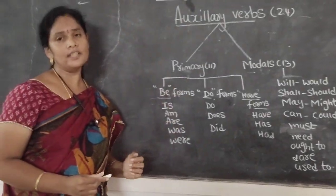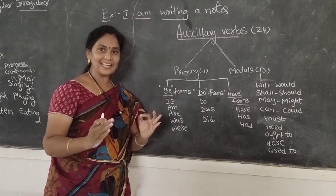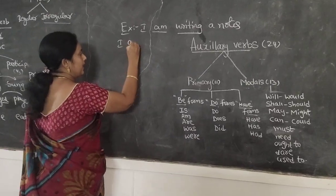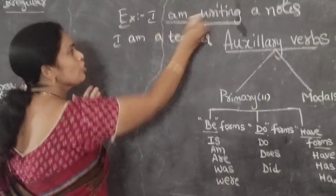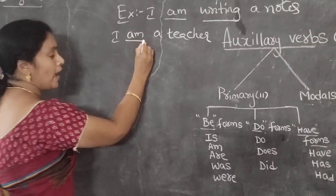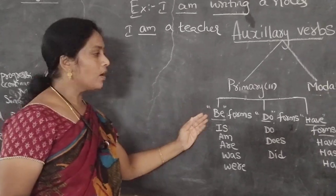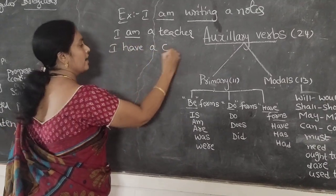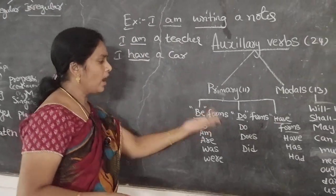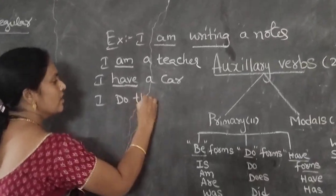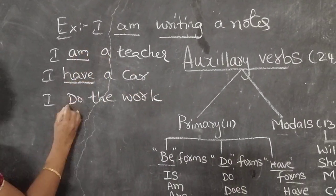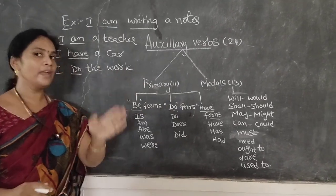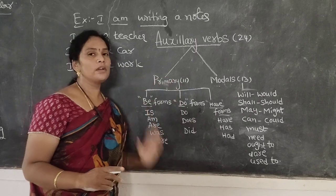Why do we call these primary auxiliaries? Because these auxiliaries can act as the main verb. If someone asks: who are you? I say: I am a teacher. Here there is no continuous tense — 'am' acts as the main verb. Similarly: I have a car — 'have' shows possession. Or: I do the work. So 'am', 'have', 'do' — all these primary verbs — act as both helping verbs and main verbs. That's why we call them primary verbs.